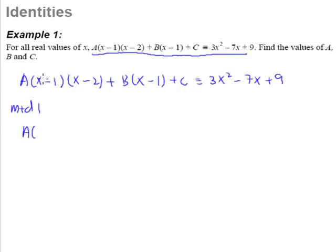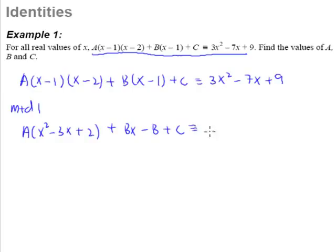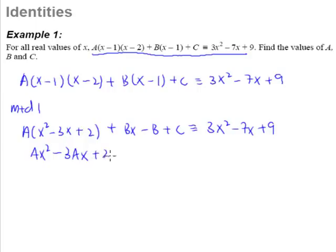So this is what you will get. When you expand this product, you get x² - 3x + 2. And of course you multiply in the B, you get Bx - B, and then plus C. It's equal to 3x² - 7x + 9. So when you multiply in the A, you get Ax² - 3Ax + 2A, plus Bx - B + C, equal to the same thing on the right-hand side.